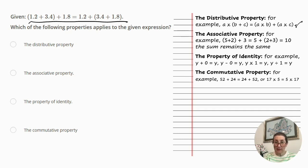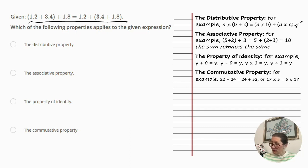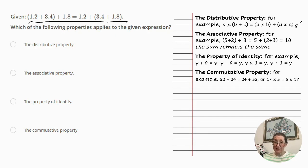The next one is the associative property. That means for a given operation, rearranging the parentheses will not change the result. For example, (5 plus 2) plus 3 equals 5 plus (2 plus 3), and they both equal 10. The sum remains the same.